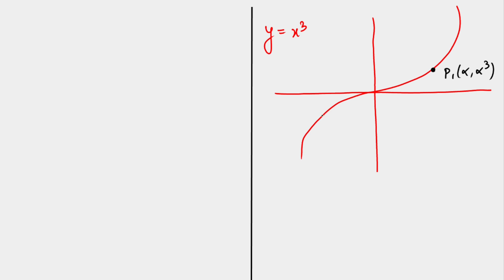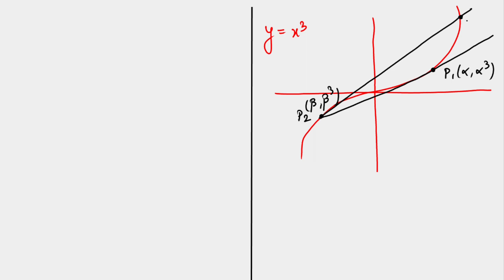From P1 we draw a tangent, which meets the curve again at P2. Let's take P2 as (beta, beta³) — again, only one variable since the function is known. From P2 we draw another tangent, meeting the curve at P3, which we call (gamma, gamma³). From P3 we draw yet another tangent, meeting the curve at P4.